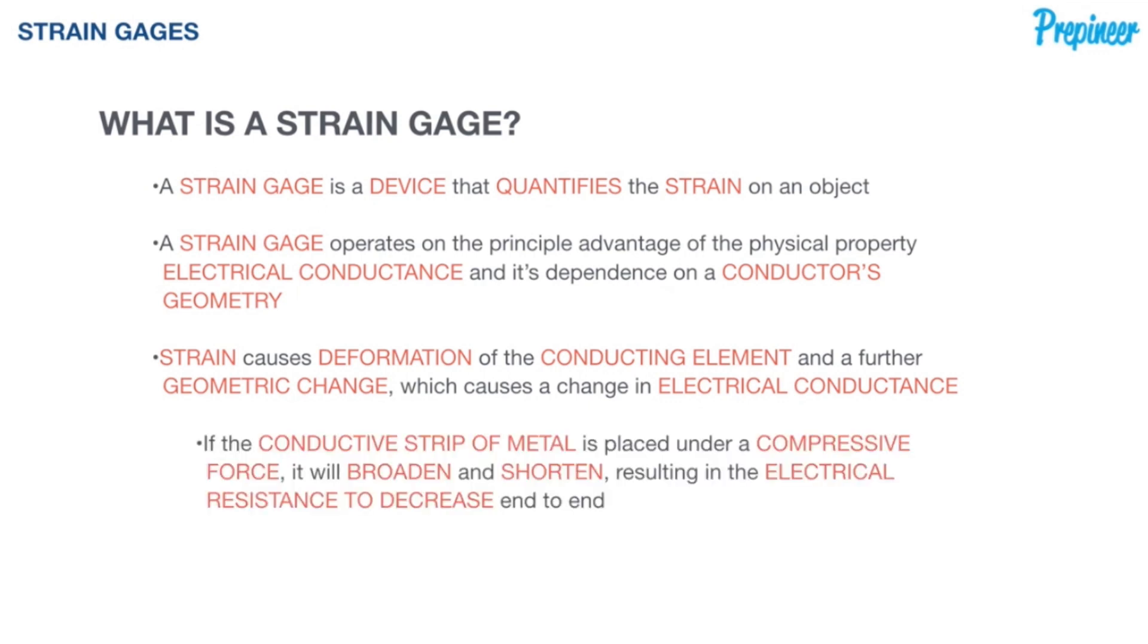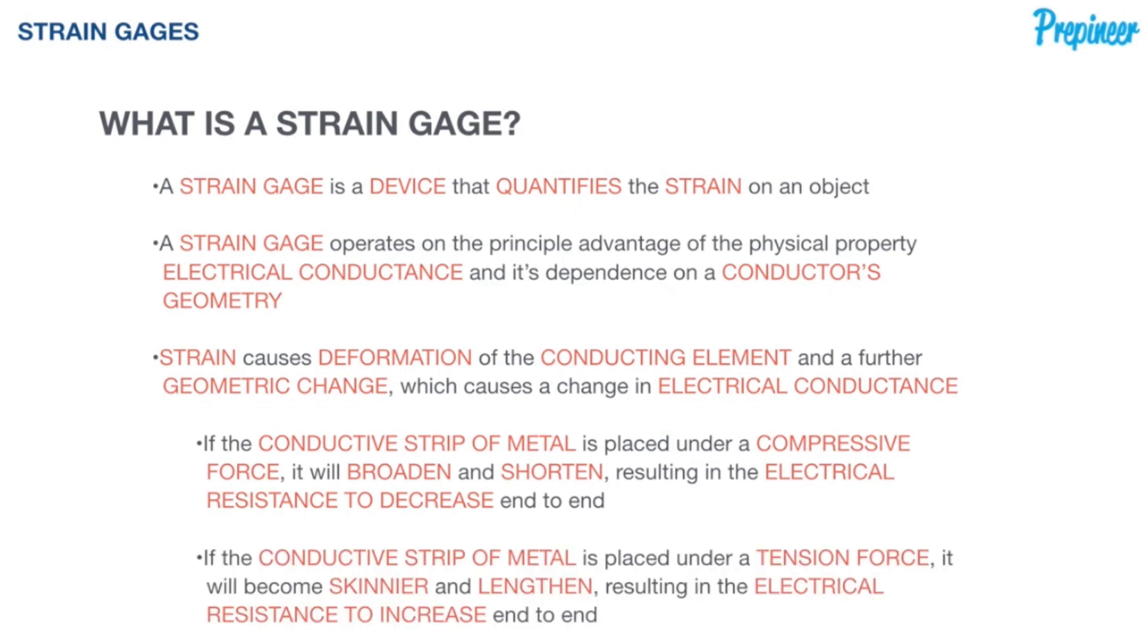In practice, if the conductive strip of metal is placed under a compressive force, it will broaden and shorten, resulting in the electrical resistance to decrease end over end. On the other hand, if the same conductive strip of metal is stretched in tension, it will become skinnier and longer, resulting in the electrical resistance to increase end over end.